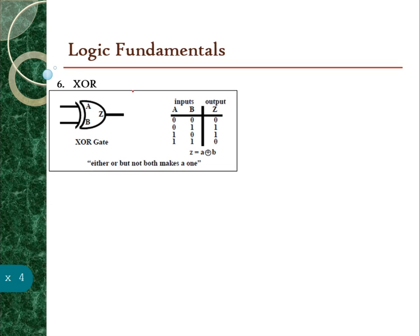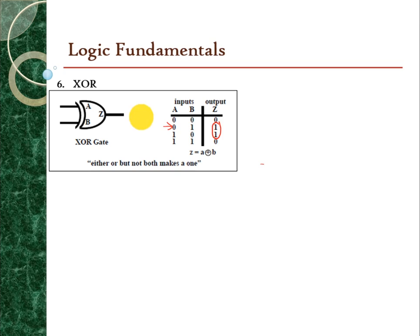Now we move to the next logic, which is the XOR. The XOR gate may have any number of inputs and one output — common implementations have only two or sometimes three inputs. For the output of an XOR gate to be logic one, there must be an odd number of inputs at logic one. Otherwise, the output is logic zero. Either one or the other but not both makes a one.